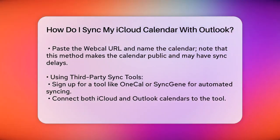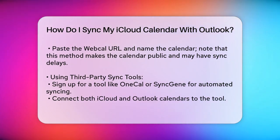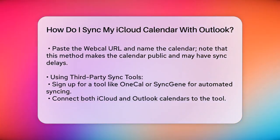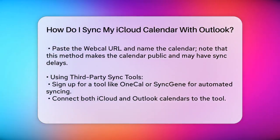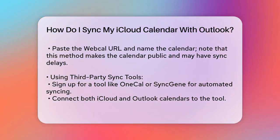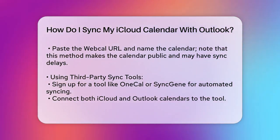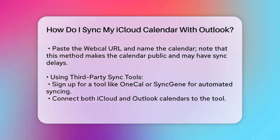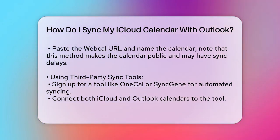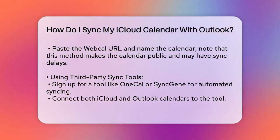Connect your iCloud and Outlook calendars to the tool. Configure the sync settings to choose what data you want to sync and whether it's a one-way or multi-way sync. Click Start New Sync to begin the synchronization process. This method ensures real-time syncing without making your calendar public.